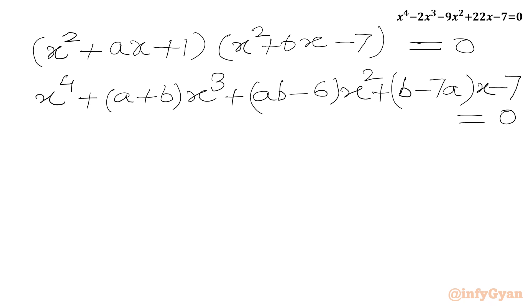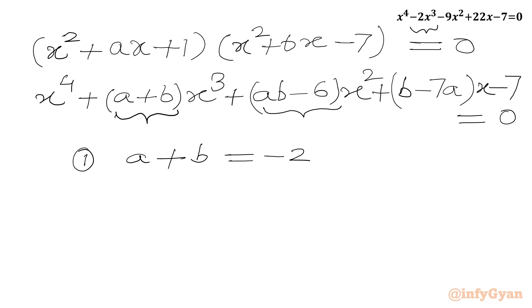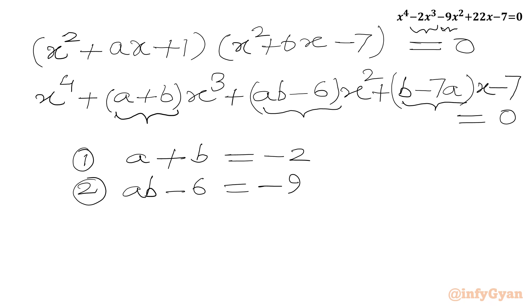Now we compare coefficients. Equation 1: a + b = -2. Equation 2: ab - 6 = -9. Equation 3 after comparing coefficient of x: b - 7a = 22.